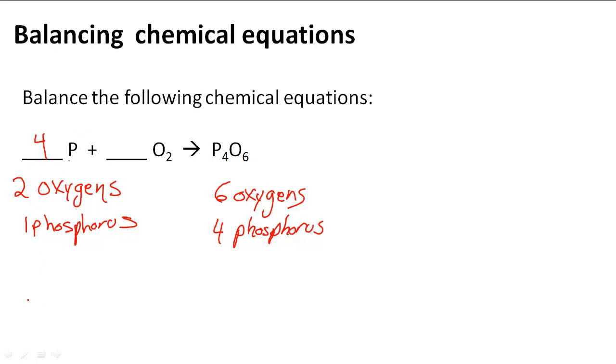So if I do add four, now I have four phosphorus on this side, on the left side, on the reactant side, and four phosphoruses on that side. So I've balanced that part of my equation.